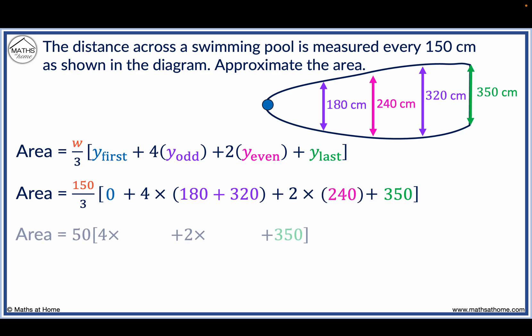150 divided by 3 equals 50, which is written in front of the brackets. 180 plus 320 equals 500. We work out the value in the brackets. So 4 times 500 equals 2000.